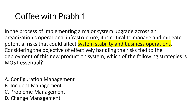So, first coffee shot. In the process of implementing major system upgrades across an organization's operational infrastructure, it is critical to manage and mitigate potential risks that could affect system stability and business operations. Considering the objective of effectively handling risk tied to the deployment of new production systems, which of the following strategies is most essential?